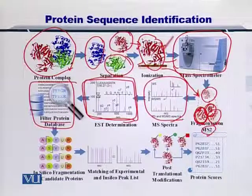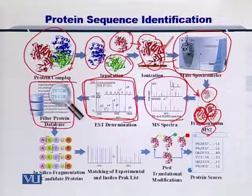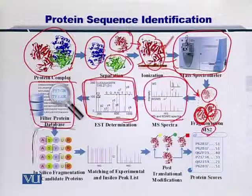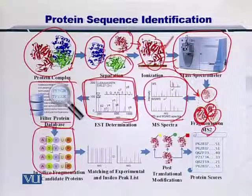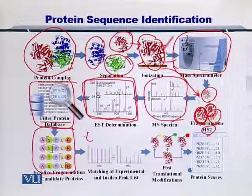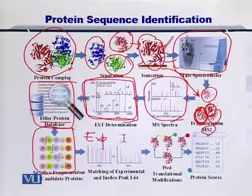You can of course reject the rest of the proteins. Now, from those proteins that you have shortlisted, you can fragment those proteins and obtain MS2. This fragmentation is called in silico fragmentation. And then you can compare the experimental data with the in silico data.